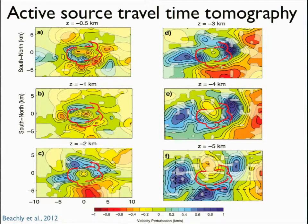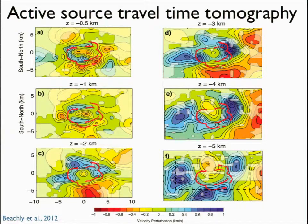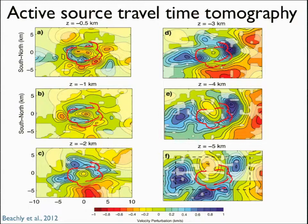This is a result from the travel time tomography of the active source data. The left-hand column shows shallower depths going down, and the right-hand side goes deeper. Areas that are masked out have poor coverage, and the red lines show the caldera faults. Coming from the surface down, you see low velocities — probably caldera infill in the center — and a beautiful ring of high velocities beneath the caldera faults, probably some kind of dikes. Then at about three kilometers depth the low velocity tapers off, and we get an increasing low velocity down to four and five kilometers depth, with high-velocity shoulders extending east and west.